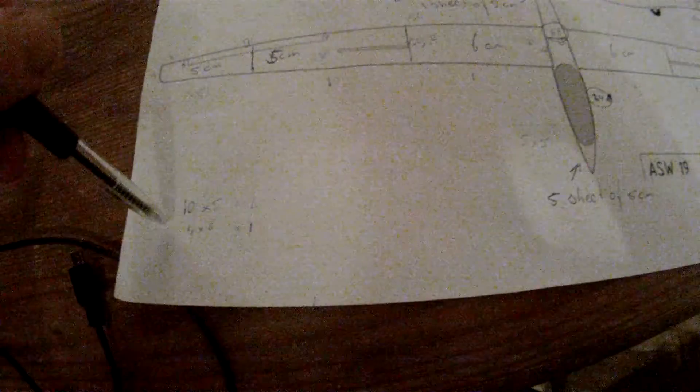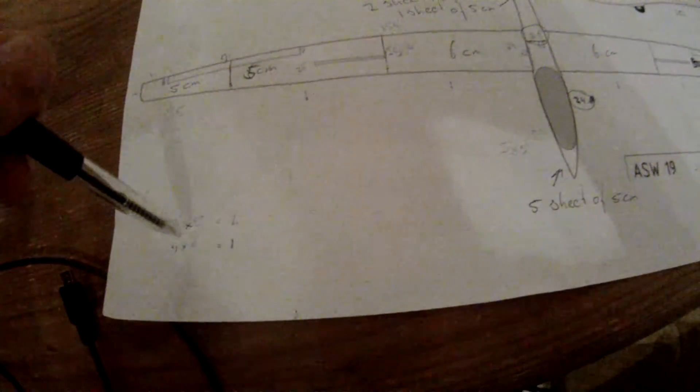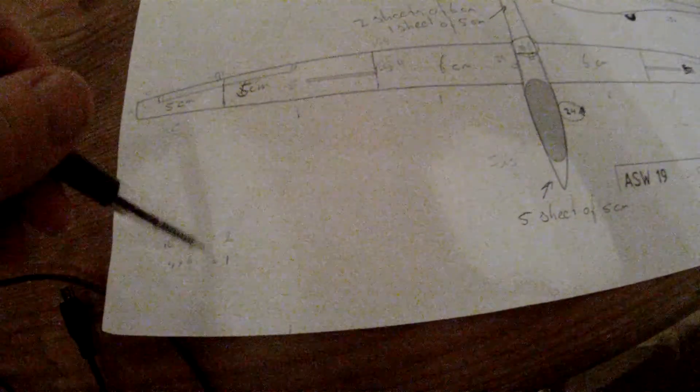And then here at the end you need about 10 sheets of five centimeters and four sheets of six centimeters. So that's about three packages. Then we know how much sheets we need to buy, so we go to the store.